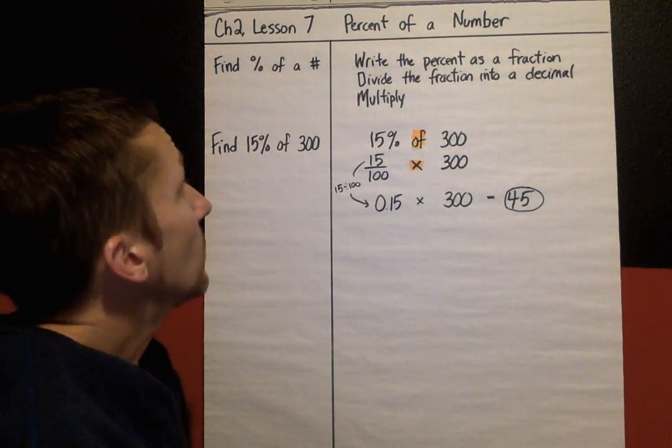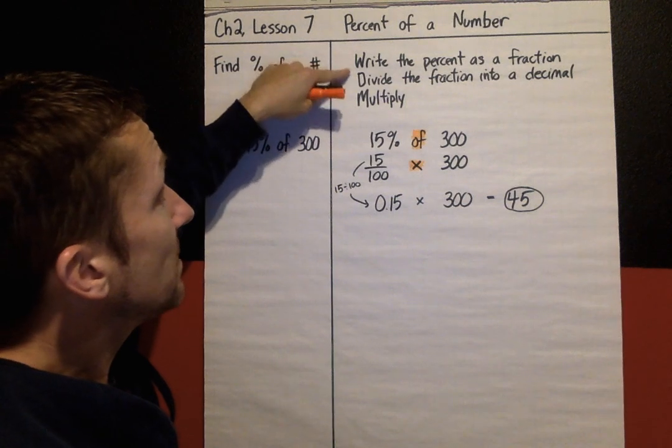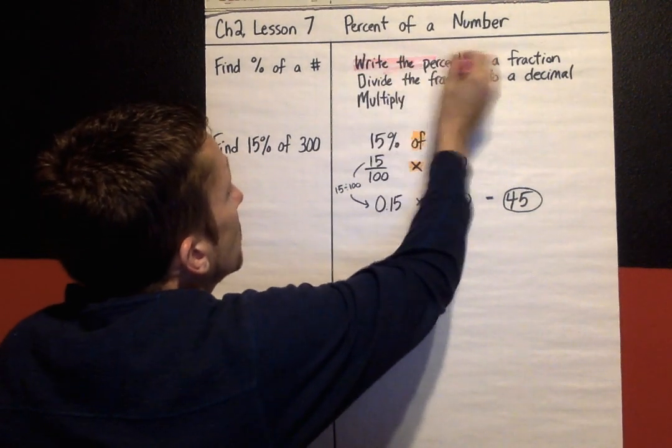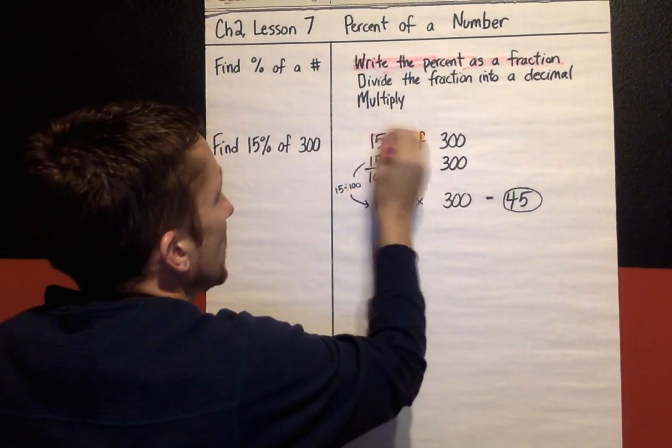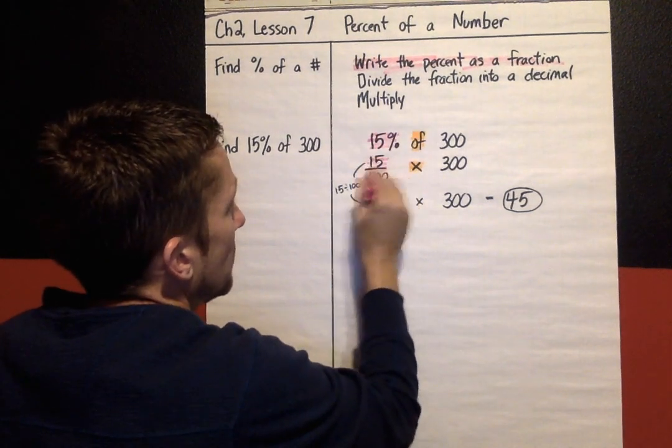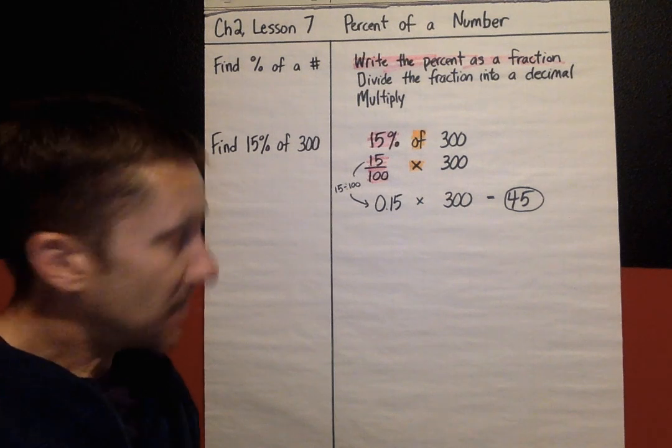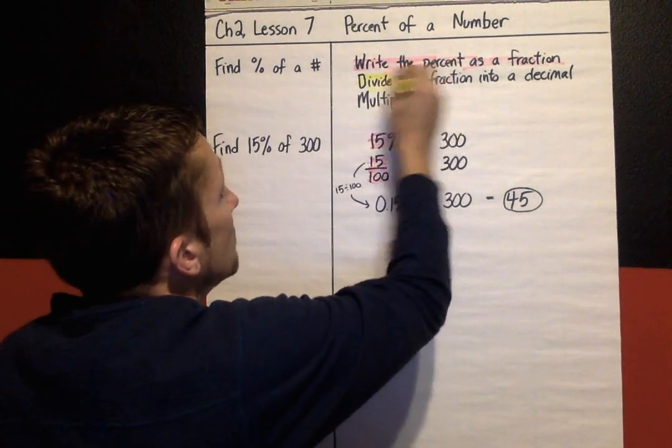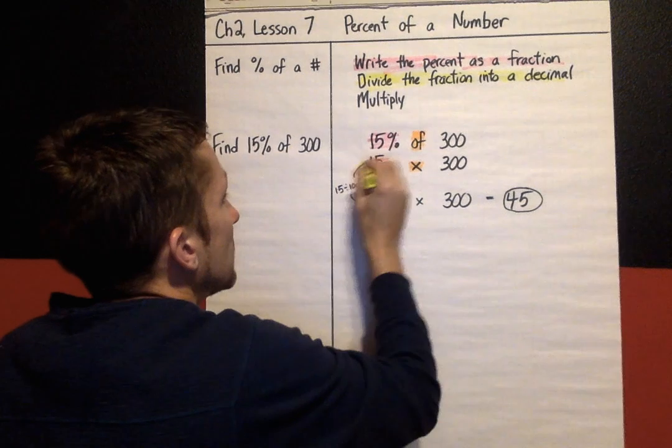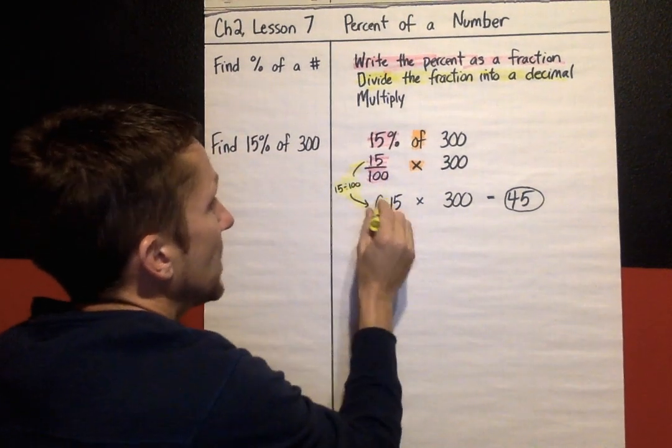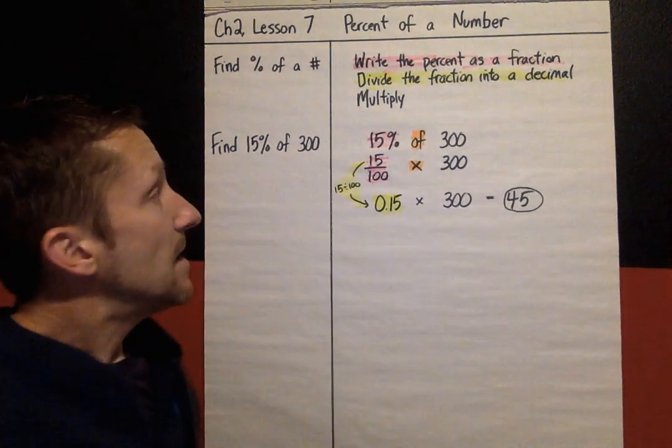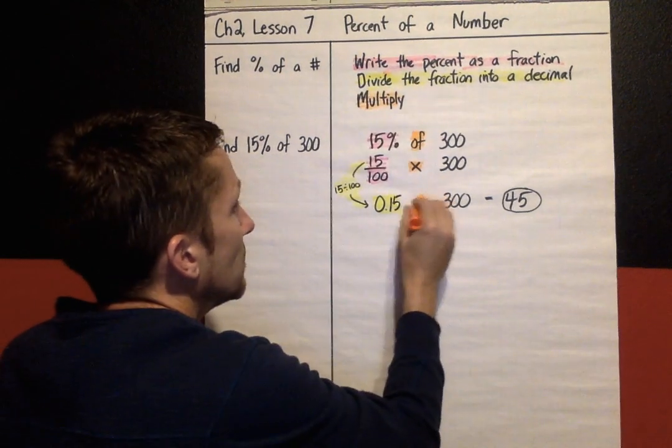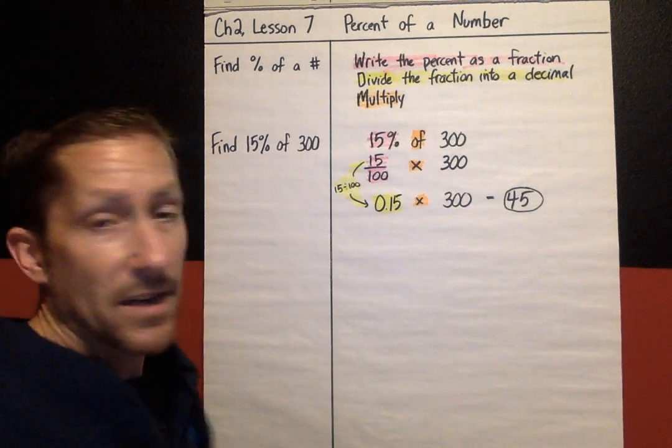Where was I? Write the percent. I'm going to go back and highlight where these steps were. So write the percent as a fraction. That was this percent. Change it into a fraction. Divide the fraction into a decimal. That's this part right here. 15 divided by 100. And finally, multiplying. 0.15 times 300 is 45.